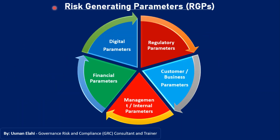What are RGPs for an institution? They may vary from institution to institution, and there are various factors involved in the identification process. But broadly, when we see financial institutions working in today's economy, they are categorized into important parameters: digital parameters, regulatory parameters, financial parameters, customer-oriented or business-oriented parameters, and internal environment or management parameters. RGPs are broadly categorized into these five areas, and can be further expanded depending on the institution's requirements. They must be broadly identified and defined before mapping with the risk horizons.